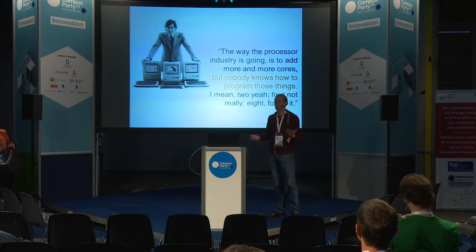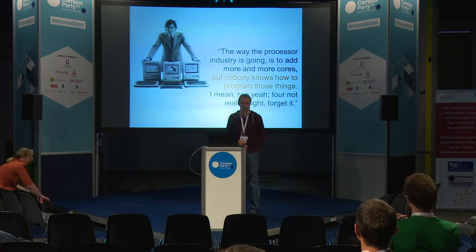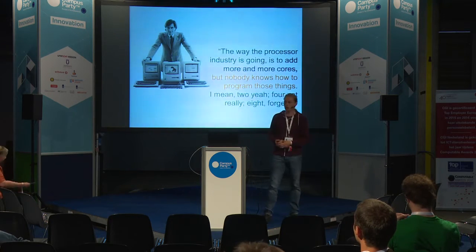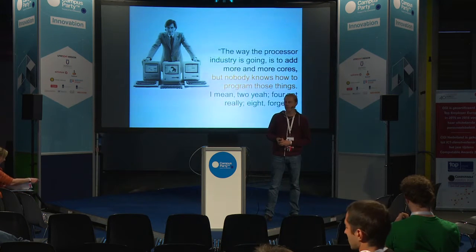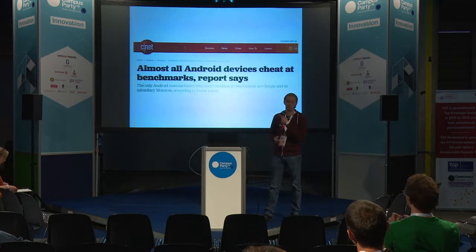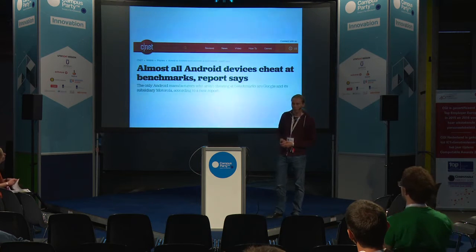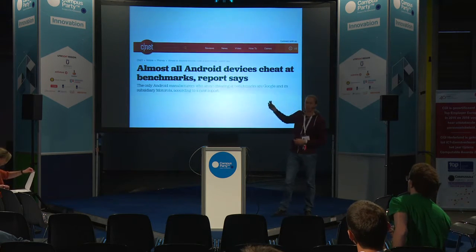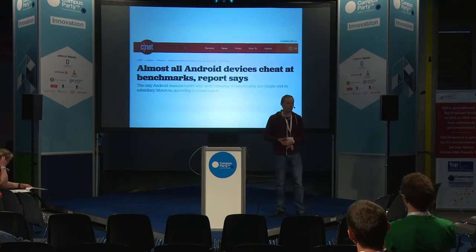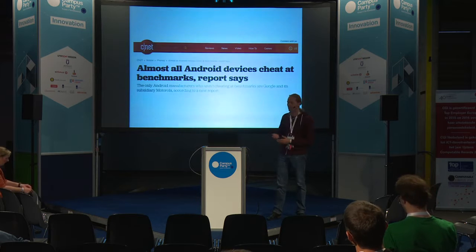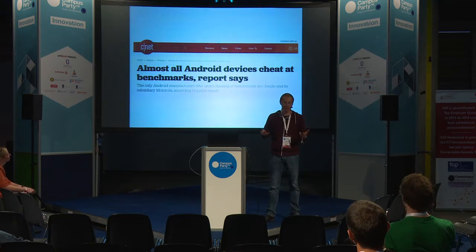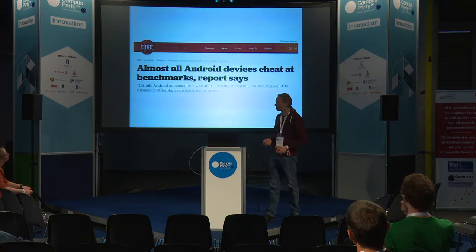So what do Samsung, Qualcomm, LG and MediaTek with their octa-cores and 10-core phones actually do? They cheat. The mobile guys were way ahead of Volkswagen in creating what in Dutch is known as 'schumel software' - fake software to cheat the benchmarks. Because if you can't use the raw processing power you have, then you'd better cheat.